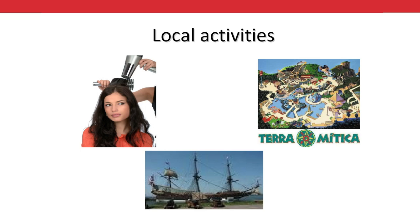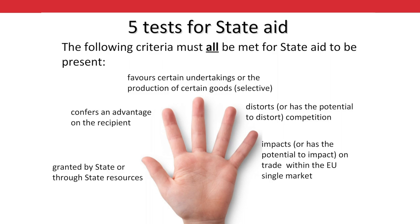Terramitica is a theme park in Benidorm. The Spanish authorities argued that due to its size it was a local facility, but the Commission did not accept this argument as they felt it was a destination venue that people from other member states would travel to Benidorm specifically to visit. It did not help that the Terramitica website can be viewed in different languages and includes details about how to get there from major European cities. In contrast, the Batavia Werff shipyards are a living history museum in the Netherlands. They were successfully able to argue that they were a local facility, as they could evidence that between 75 and 85% of their visitors came from within a 75km radius of the site.